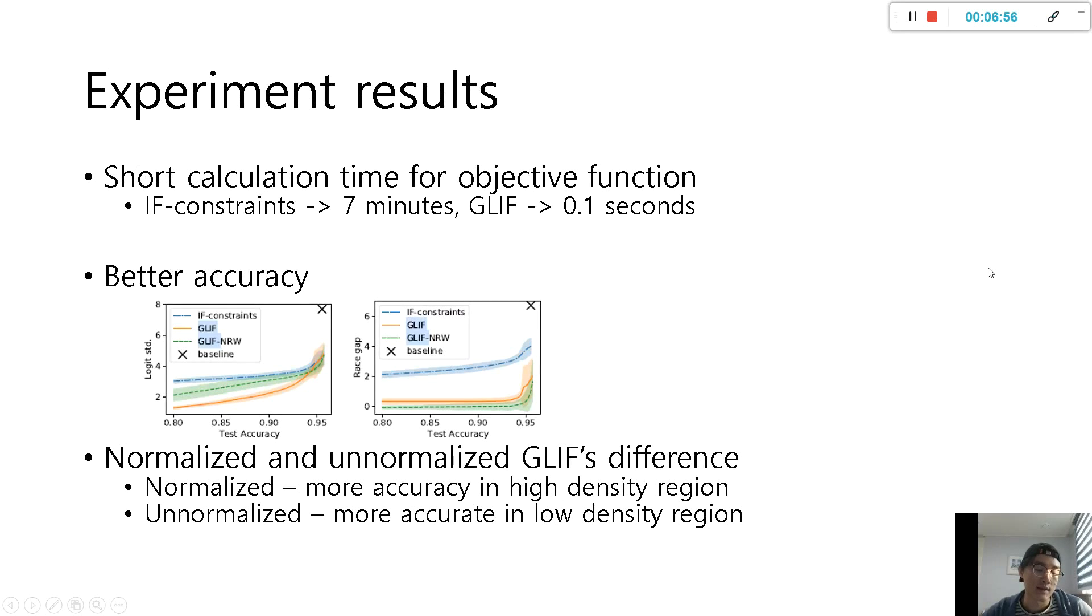And lastly, experimental results comparing IF-constraints and GLIF. What is IF-constraints? IF-constraints is Dwork's algorithm that enforces restriction to global individuals. GLIF is Graph Laplacian Individual Fairness, which is the algorithm of this paper.